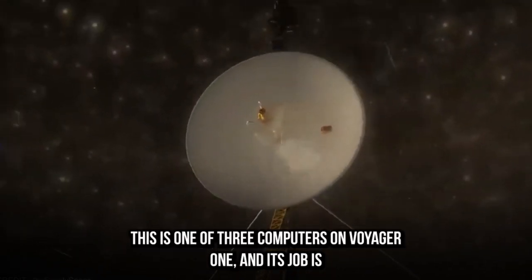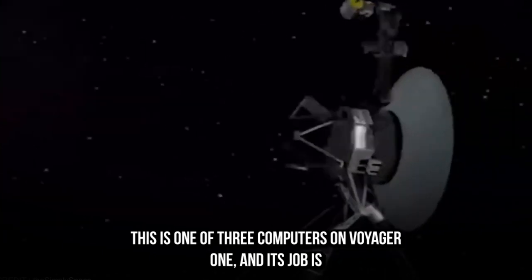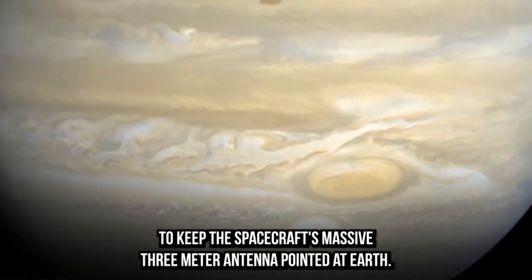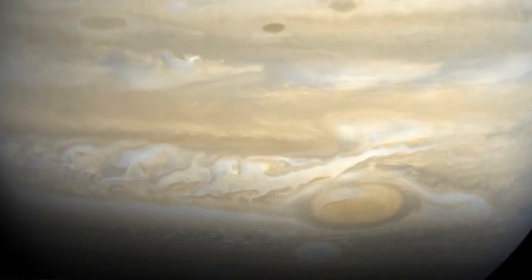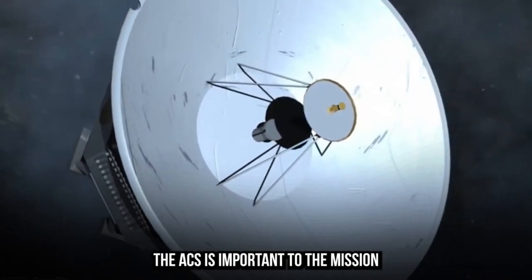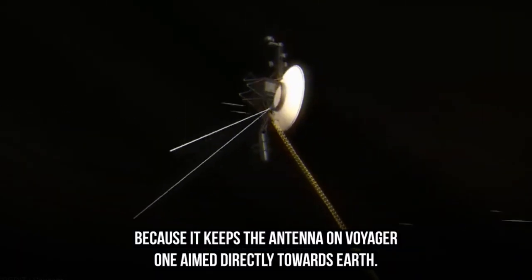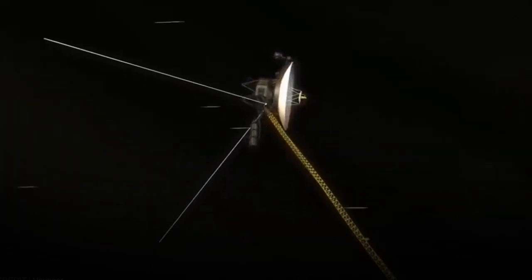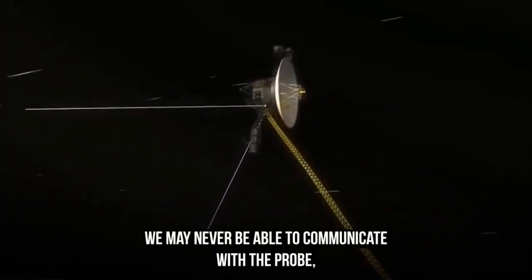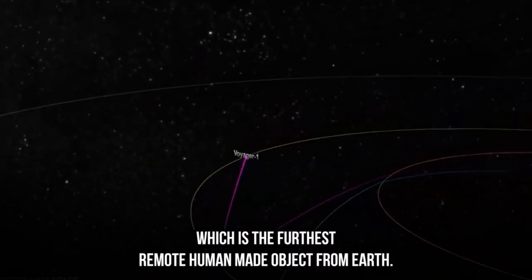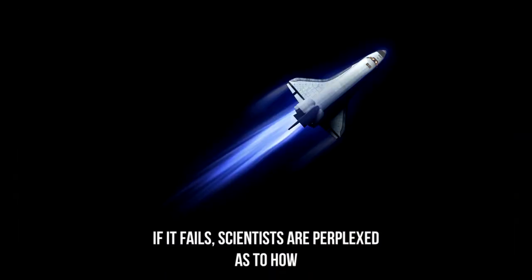This is one of three computers on Voyager 1, and its job is to keep the spacecraft's massive 3-meter antenna pointed at Earth. The AACS is important because it keeps the antenna aimed directly towards Earth. We may never be able to communicate with the probe, which is the furthest human-made object from Earth, if it fails.